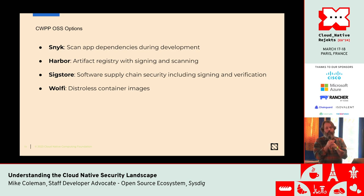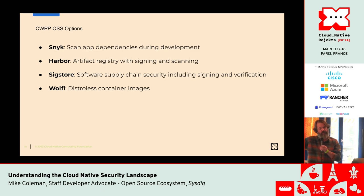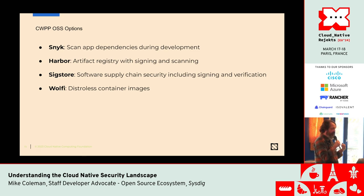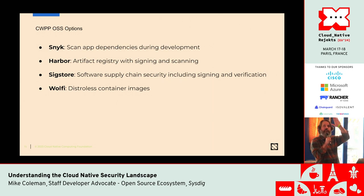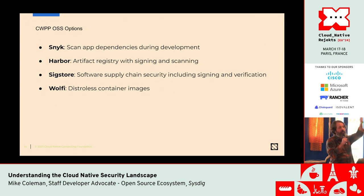Once you have them scanned and you know they're good and you've locked some of this stuff out, you can store them in Harbor. Harbor is an artifact registry that has scanning, so that if you scanned it and didn't find anything, but then a vulnerability is introduced later, you will know it's there.